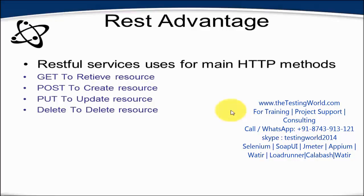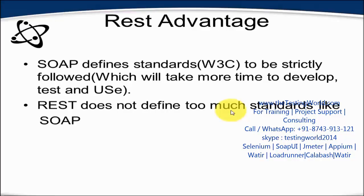In the case of REST services, we can use all the main methods of the HTTP protocol: GET, which fetches data from the server; POST, which enters new data to the server; PUT, which updates data on the server; and DELETE, which deletes data from the server. In SOAP services, only GET is supported. Additionally, SOAP defines strict standards like W3C standards that must be strictly followed during development, which takes more time to develop, test, and use. But in the case of REST services, it does not follow any strict standards, so it will be much faster in development, testing, and use.